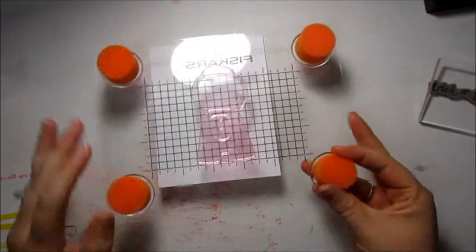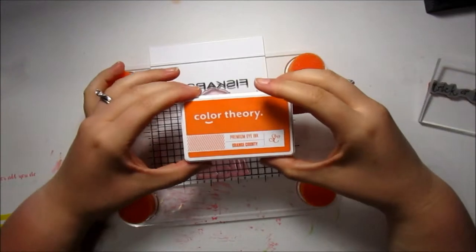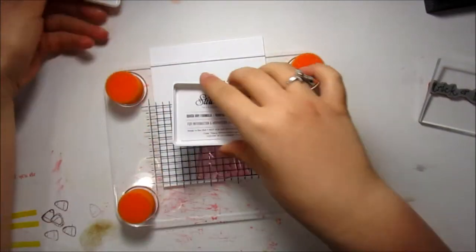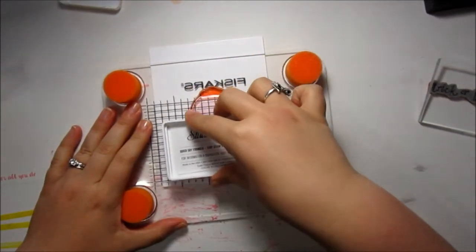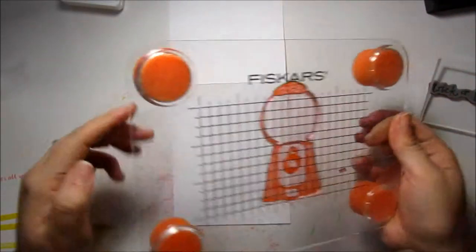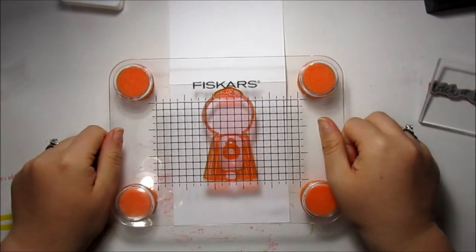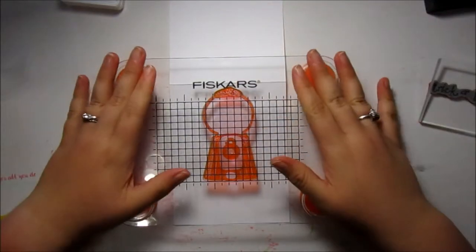I'm going to use the Studio Calico Orange County ink and I'm going to ink up this gumball machine. I'm going to unfold that just so it's easier for me to stamp, and I'm going to be stamping up near the top but in the center.